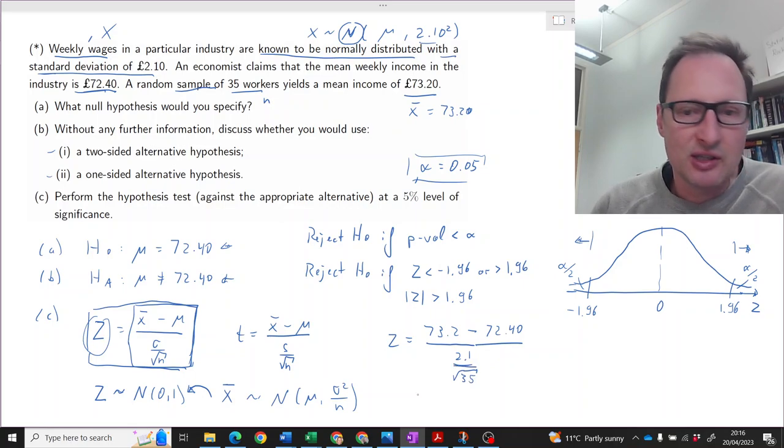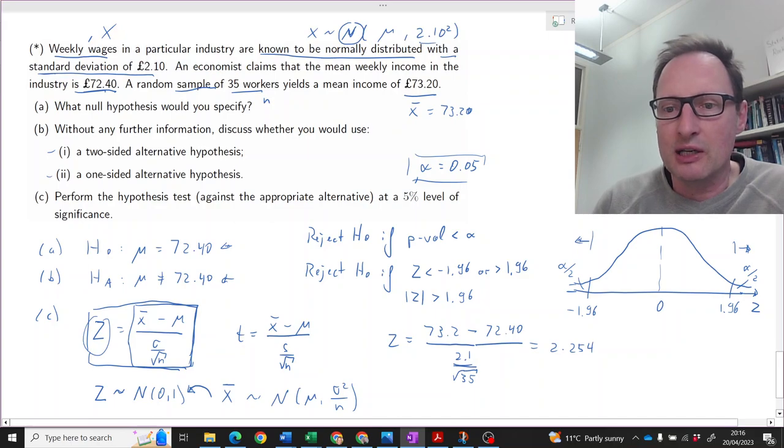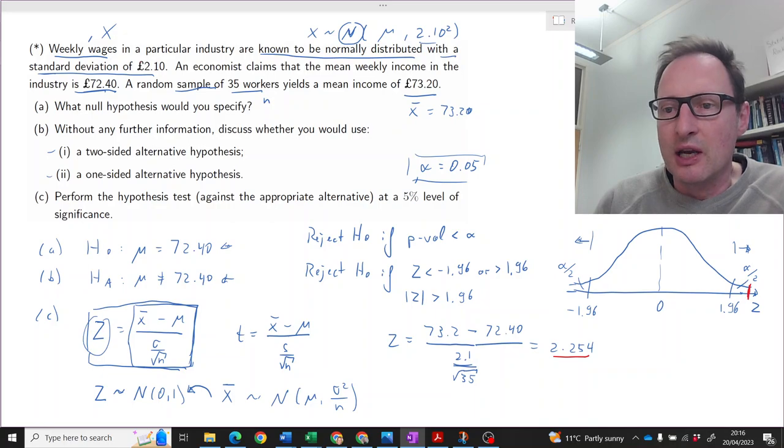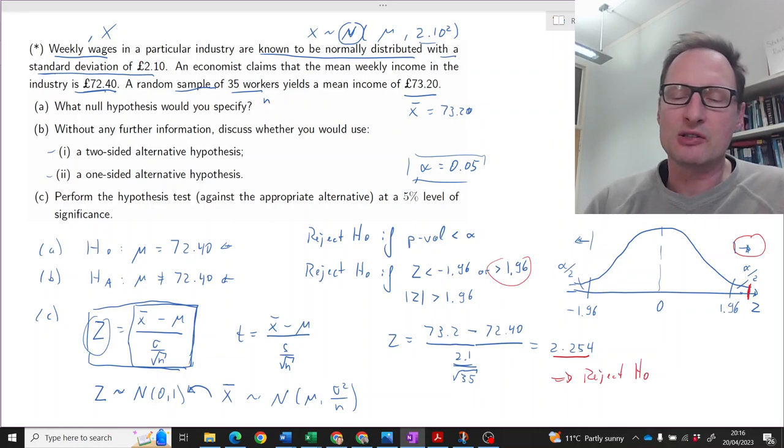So this is our test statistic. If you punch that into your calculator or into Excel, you find 2.254 as your test statistic. So that value here is placed somewhere here, so that means it is in our rejection region because it is larger than 1.96. Therefore, we shall reject H-naught. So the sample does deliver us evidence against the null hypothesis.